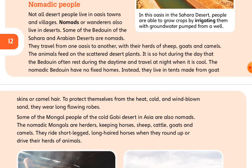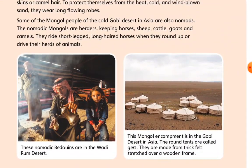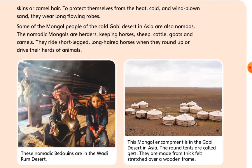It is so hot during the day that the Bedouins often rest during daytime and travel at night when it is cool. The nomadic Bedouins have no fixed homes. Instead, they live in tents made from goat skin to protect themselves from heat, cold, and wind-blown sands. They wear long flowing robes.